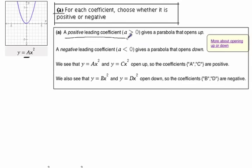A positive leading coefficient, A greater than zero, makes the parabola open up. So if A is positive, it's going to look like this. So in this case, it opens up, so therefore A is positive.